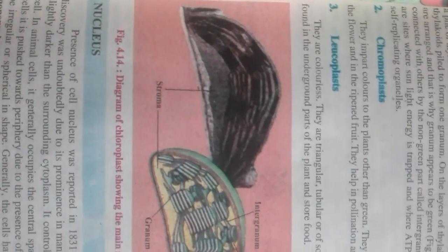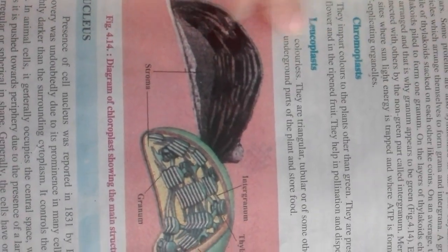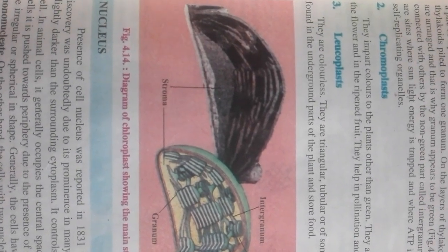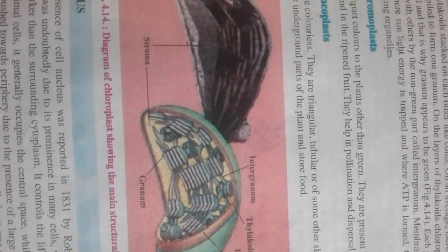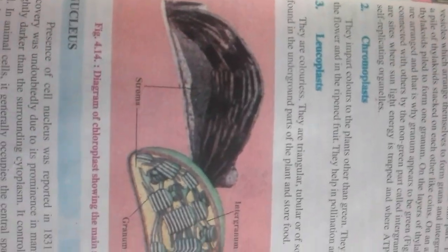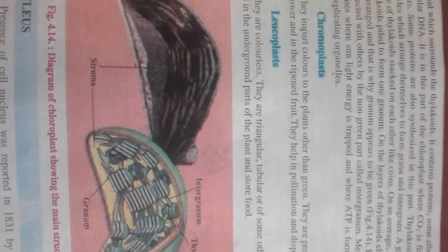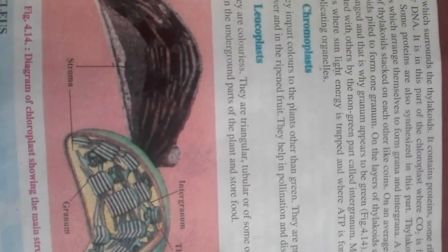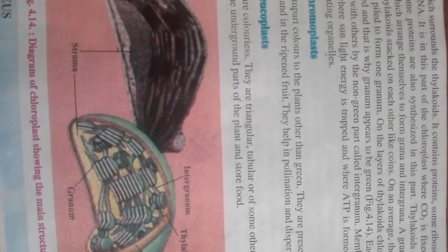The third type is leucoplasts. Leucoplasts are colorless plastids. They are found in the underground parts of plants, such as roots, and they store food. Leucoplasts have no role in photosynthesis.